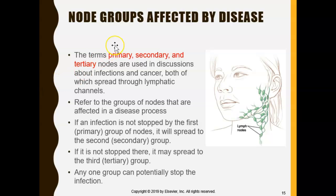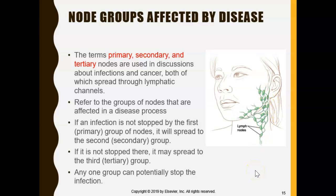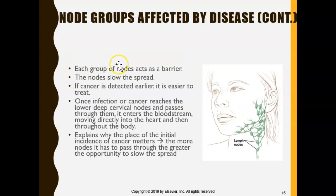Lymph nodes function as primary, secondary, and tertiary checkpoints. If there's an infection and the primary node doesn't catch it, it moves to the secondary node; if that doesn't catch it, it goes to the tertiary node. There are three different checkpoints trying to catch the infection before it spreads through all the channels. Each group of nodes acts as a barrier to slow down the spread of cancer or infection.